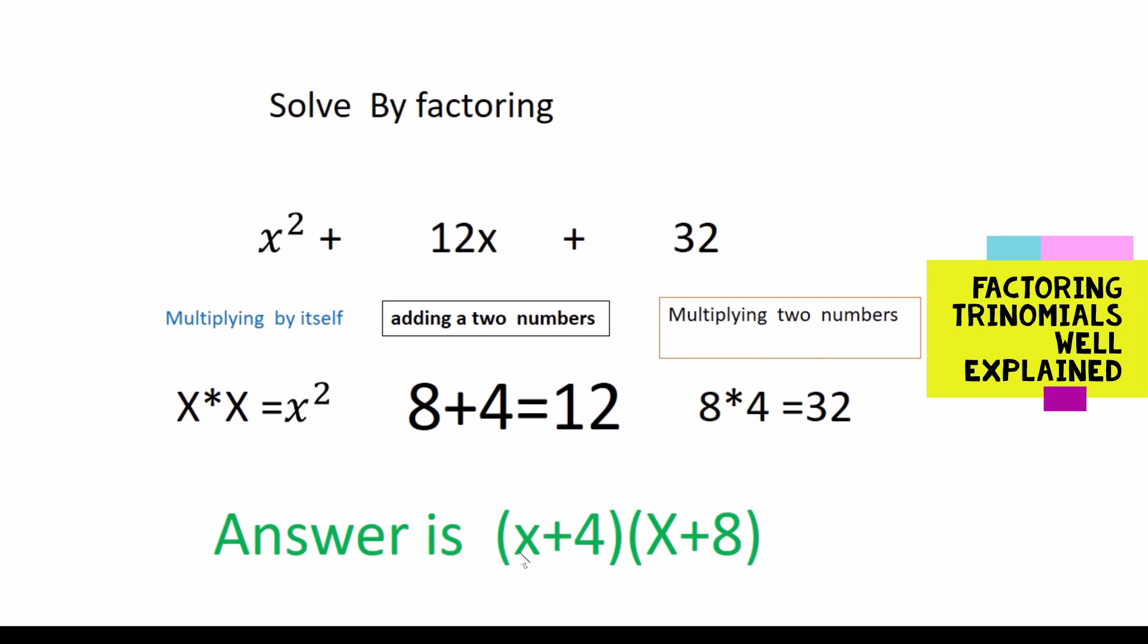So the answer should be x plus 4 times x plus 8. The way you do it to make sure you got it right is to multiply x times x and you got x squared, then x times 8 became 8x, and then 4 times x plus 8 became 12x, and then you multiply 4 times 8 you got 32 and that's how you solve it.